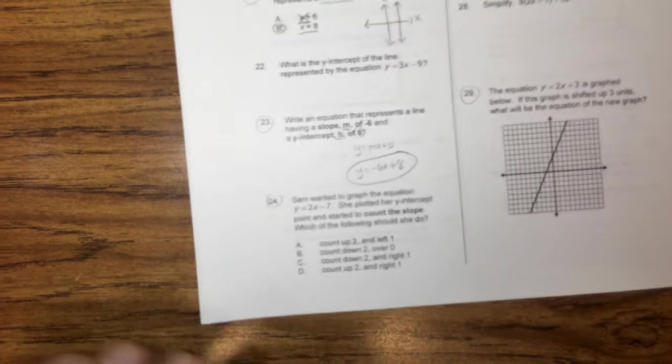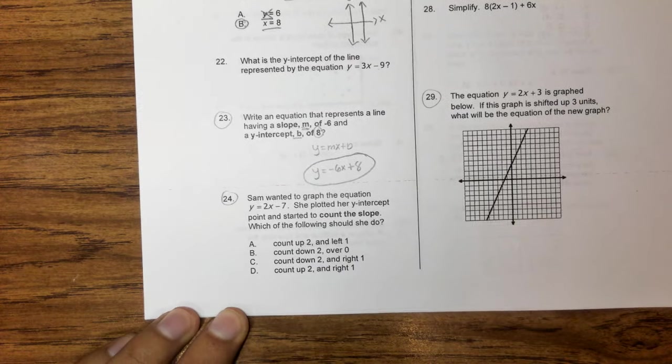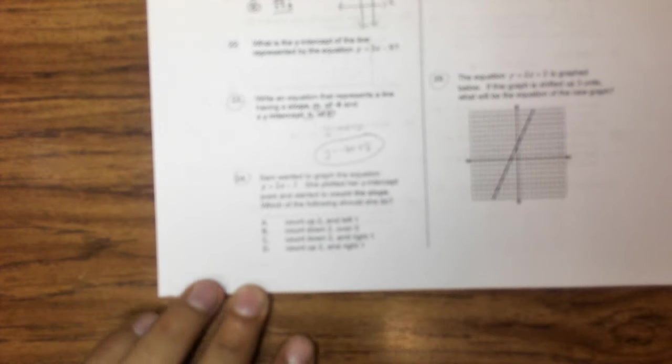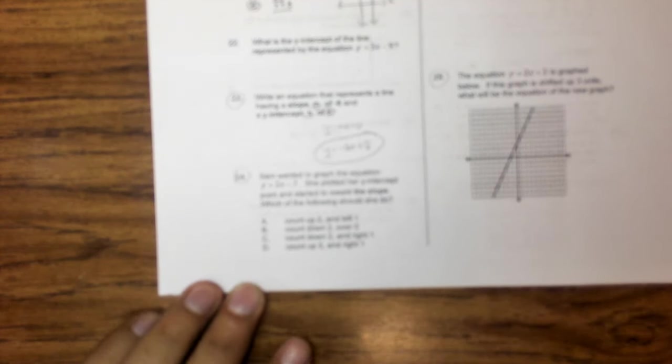Alright, 24. Sam wanted to graph the equation y equals 2x minus 7. She plotted her y-intercept point and started to count the slope, which of the following should she do? Oops, come on, autofocus.